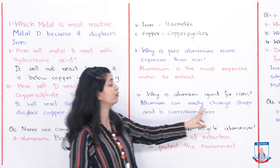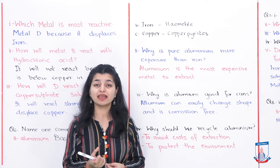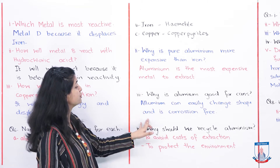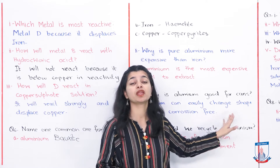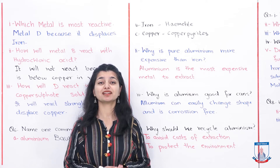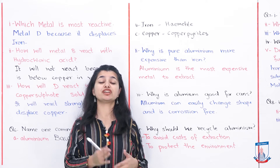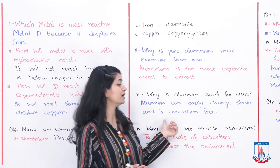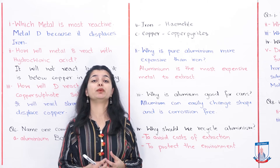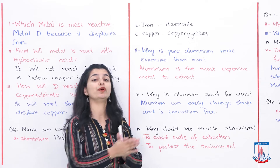The next part asks: why is aluminum good for drink cans? Aluminum can easily change shape and is corrosion-free. Because aluminum is ductile, you can change its shape easily. And because it is corrosion-free, it does not rust or corrode easily. These properties make it suitable for manufacturing drink cans.